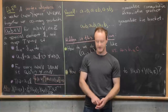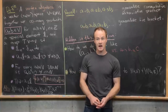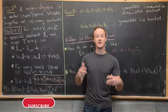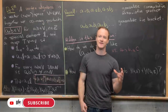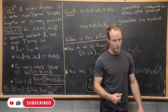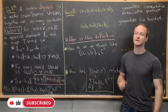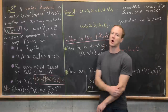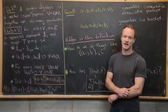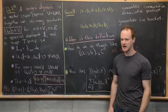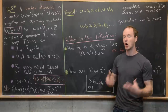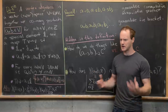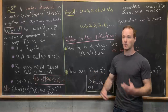We're continuing to look at the notion of a vertex algebra, and in this video we want to look at how to combine two things called vertex operators via this thing called the normally ordered product, or sometimes the Wick product. Before we do that, I want to recall our definition of a vertex algebra which we saw in the first video, and then point out some maybe holes in this definition that lead to maybe confusion in the whole setup.